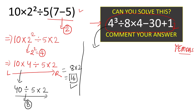Now we will solve the bonus question using formulas. First we evaluate the parenthesis, which is 4 cubed. 4 cubed equals 4 times 4 times 4 — that is 4 times 4 equals 16, and 16 times 4 equals 64.